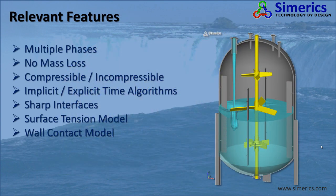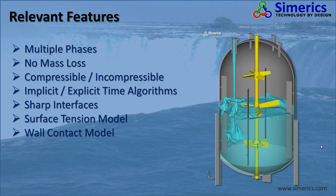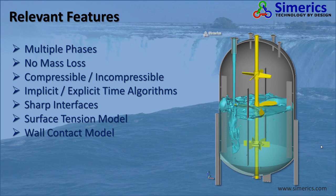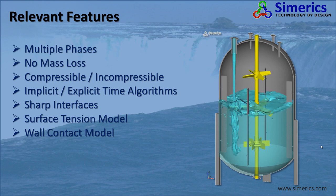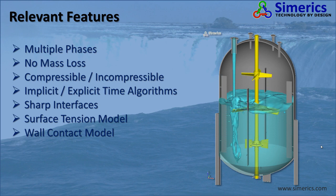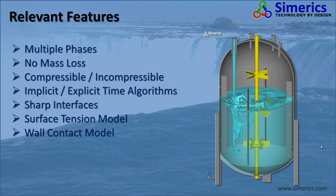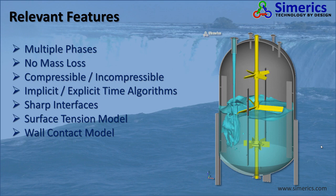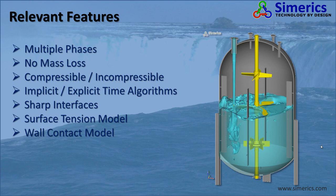I'll briefly list the relevant features and then explain them in more detail. The relevant features offered by Sumerix MP and PumpLynx are the modeling of multi-phases; masses conserved, indicating that physical laws are not violated, so there's no mass loss; compressible and incompressible effects are accounted for; implicit and explicit time algorithms; sharp interfaces where the interface thickness is refined; and PumpLynx has surface tension and wall contact models, which take into account a more detailed behavior of the fluid.